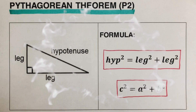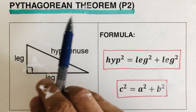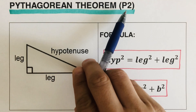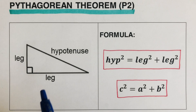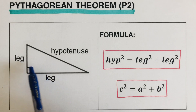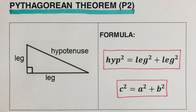Hello everyone, today we're going to cover the Pythagorean theorem — this is the second part. I will put the link to the first part in the description box below. In the first part, the side lengths of the triangle were all integers, meaning they were all positive whole numbers. Today we're going to work with side lengths that are not whole numbers.